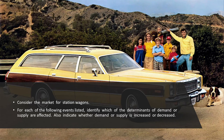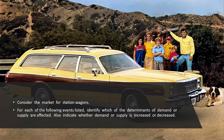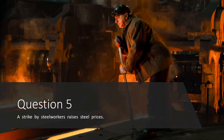Question four: consider the market for station wagons. For each event, identify which determinant of demand or supply is affected and whether demand or supply increases or decreases. Question one: people decide to have more children. Station wagons are big cars with lots of space. If people have more children, this is a change in tastes — they'll want larger vehicles. Demand for station wagons increases; supply is unaffected. The result is a rise in both price and quantity, shown as a rightward shift of the demand curve.